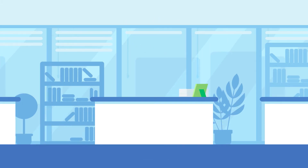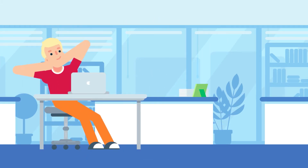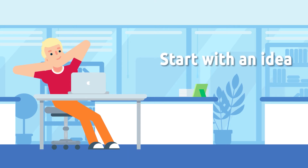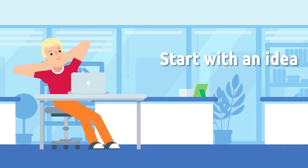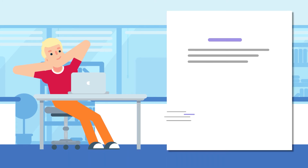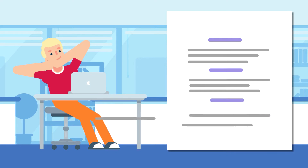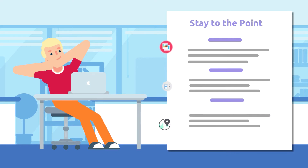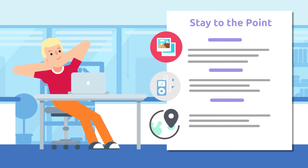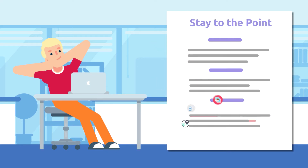There are a few simple rules on how to get it right. Start with an idea. Take a paper and try to describe main app functions or app ideas in short statements — stay to the point. Your app name should indicate what your app actually does.